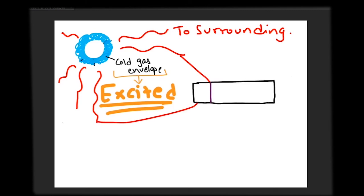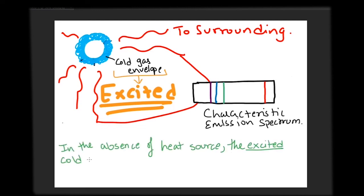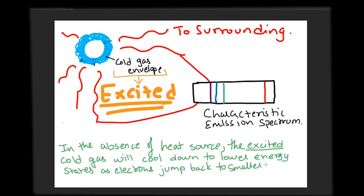to its ground state and radiate the absorbed energy and thus show its unique emission spectrum. A system of atoms will always want to be in the lowest energy state possible in the absence of an energy source.